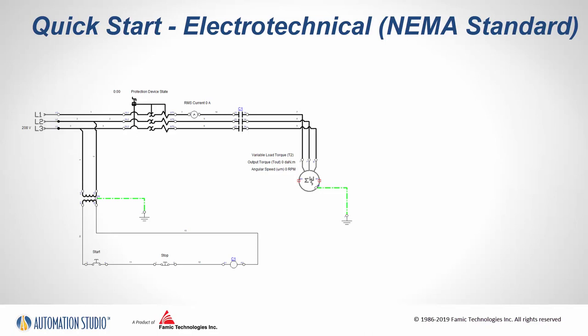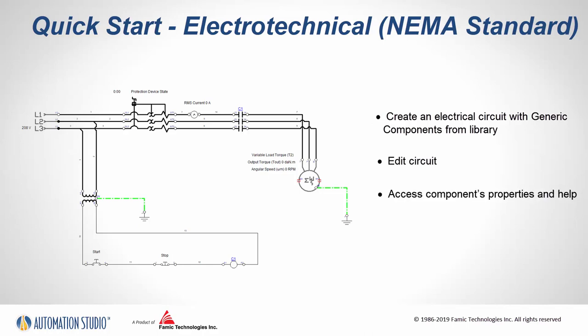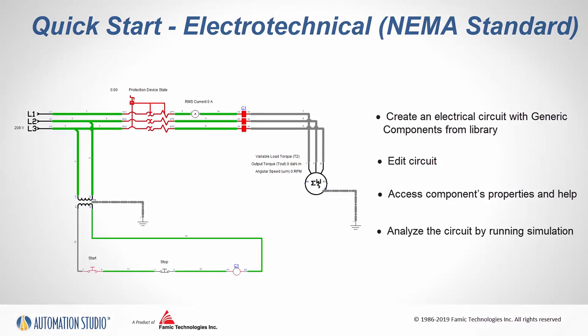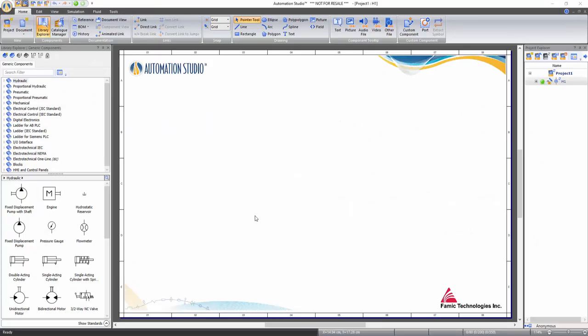This training video outlines the steps to create your first electrical circuit in Automation Studio using NEMA standards. In the process of recreating this circuit, the user will learn how to create an electrical circuit with generic components from the library, how to do circuit addition, how to assess component properties and help, and how to run simulation and analyze the circuit.